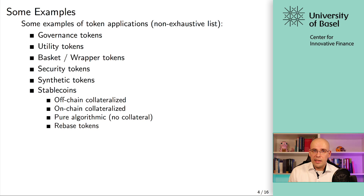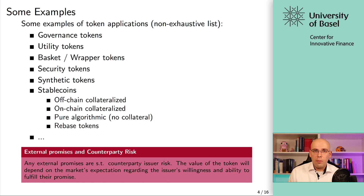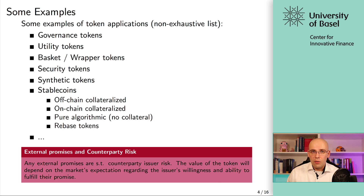Essentially whenever you have an asset and want to track it on the blockchain, you can use these token standards to create these assets. What's super important to understand — and that's why it's in this red box — is that any external promises: whenever a token issuer promises you delivery of fiat currency, gold, real estate, or anything not directly natively represented on the blockchain, these tokens will be subject to counterparty issuer risk. When the issuer is not willing or not able to fulfill their promise, these tokens will trade at a discount. It's subject to the reputation of the issuer.